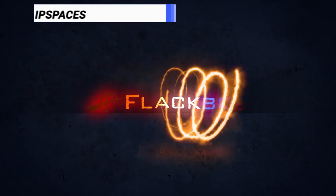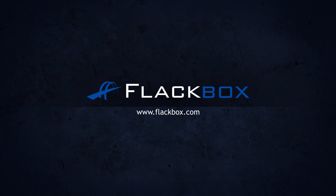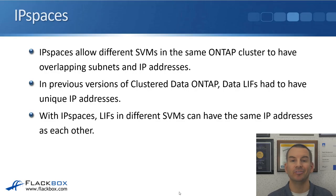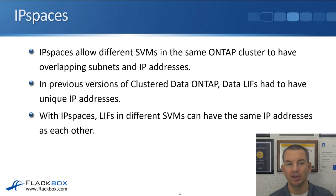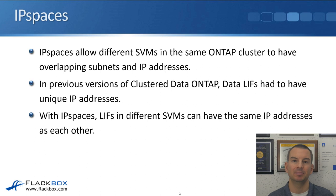In this lecture, you'll learn about IP spaces, which allow you to have duplicate IP addresses in your ONTAP cluster. IP spaces allow different SVMs in the same ONTAP cluster to have overlapping subnets and IP addresses. This was not available in older versions of cluster data ONTAP, where data lifts had to have unique IP addresses.